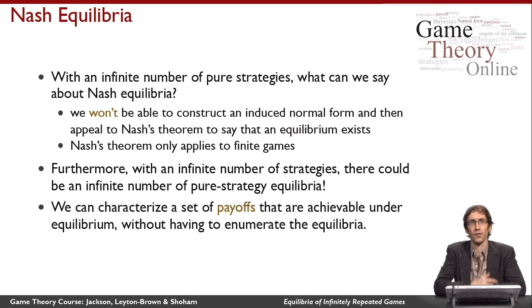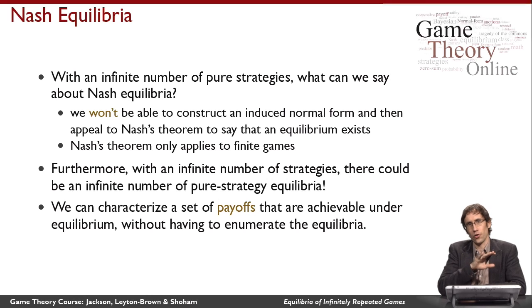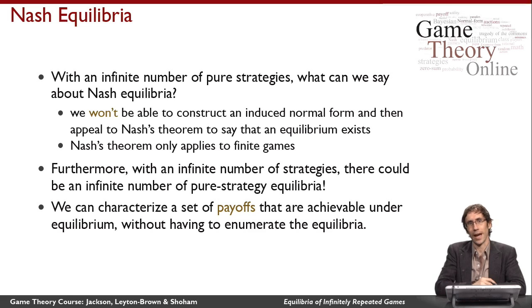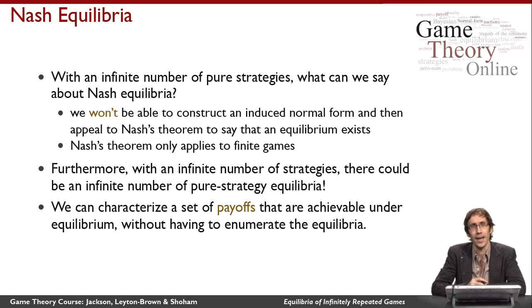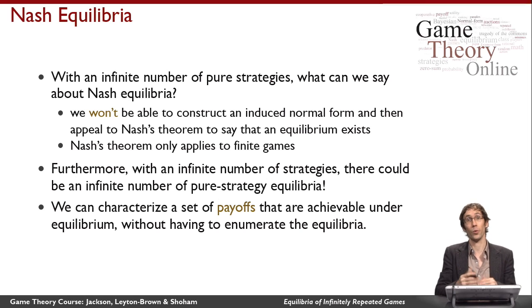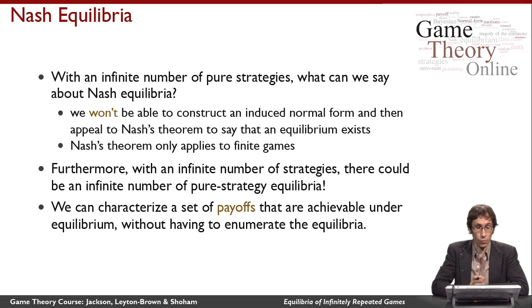What we'd really like to do as game theorists is describe the Nash equilibria of infinitely repeated games. The approach we've taken in the past has been to make an induced normal form out of a game, figure out what a strategy is, and then appeal to Nash's theorem. That worked well because we always ended up with finite-sized induced normal forms. Unfortunately, because we have an infinite number of pure strategies, we're going to get an infinity-by-infinity matrix even in the two-player case. So we don't have something to which Nash's theorem applies, since Nash's theorem only works for finite games — meaning games whose matrices contain a finite number of numbers.